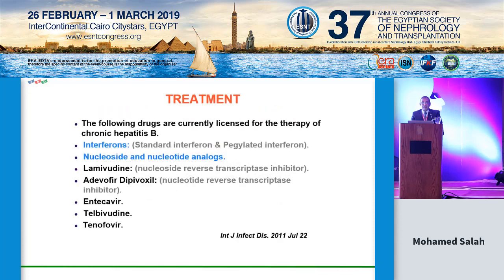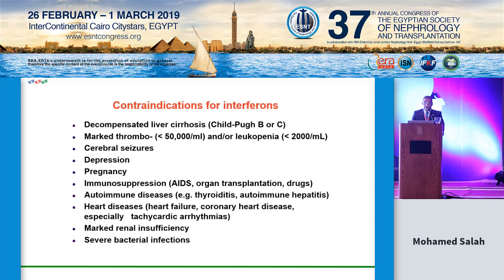For treatment, the current basis for treating chronic hepatitis B includes interferon (standard and pegylated), nucleoside and nucleotide analogs: lamivudine, adefovir, entecavir, telbivudine, and tenofovir. Contraindications for interferon include decompensated cirrhosis, marked thrombocytopenia or leukopenia, cerebral seizures, depression, pregnancy, immune suppression such as AIDS or organ transplant, autoimmune disease, and heart failure. Adefovir should be used very cautiously because of potential nephrotoxicity, and there are reports of worsening renal graft function in patients treated with adefovir. Lamivudine therapy should be considered when viral load exceeds 10,000 copies.